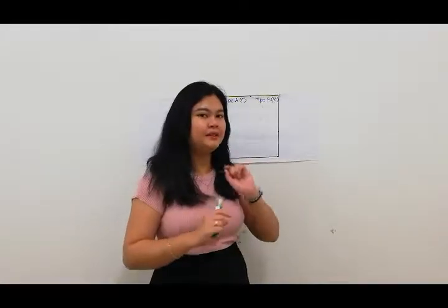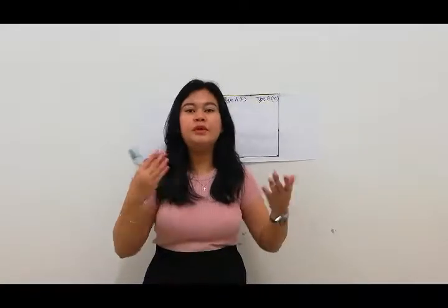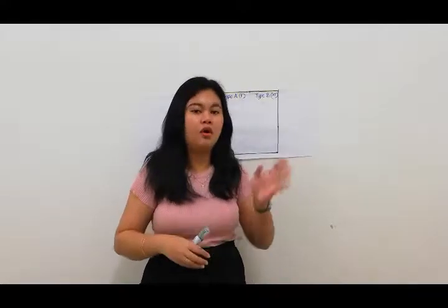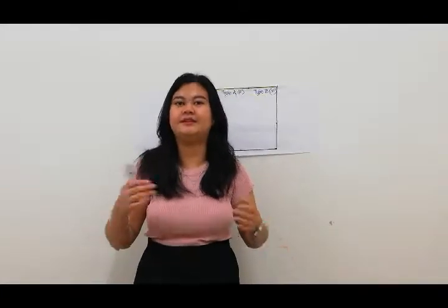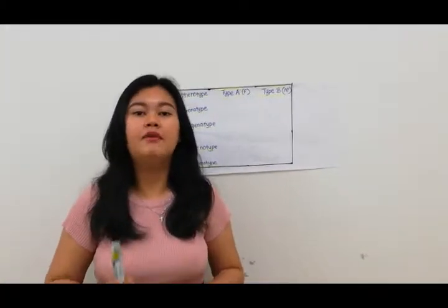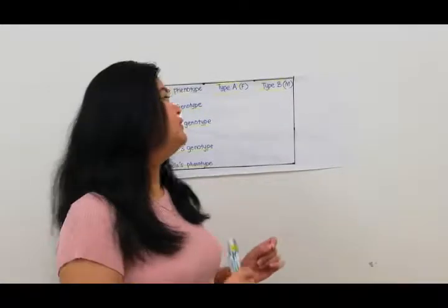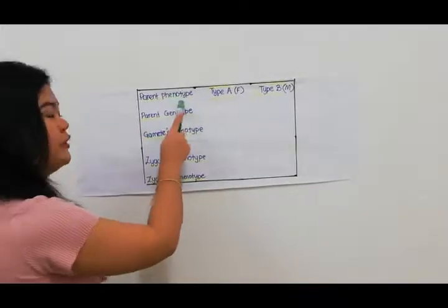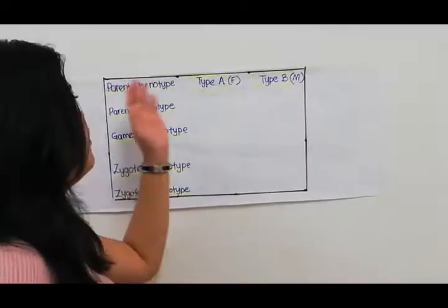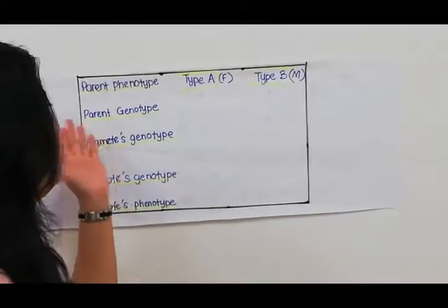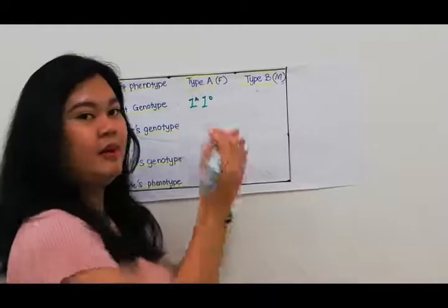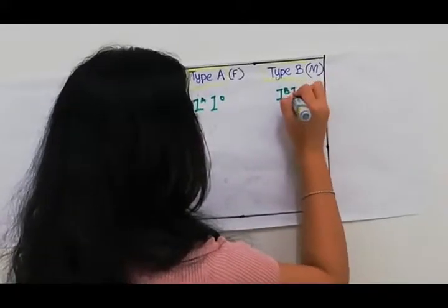Hence, this couple could have children of either blood type A — which is an O allele from the mother and an A allele from the father — or blood type B — which is an O allele from the mother and a B allele from the father. Now we are going to use another example to determine the possible blood types for children from their parents. As you can see in this table, the father has blood type A and the mother has blood type B. From the parent phenotype, we can determine their parental genotype, which is IA, IO for the father and IB, IO for the mother.